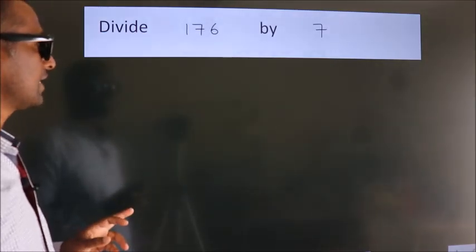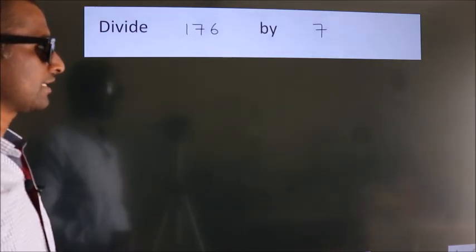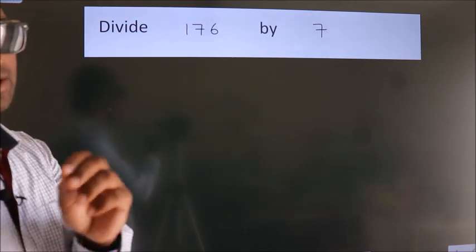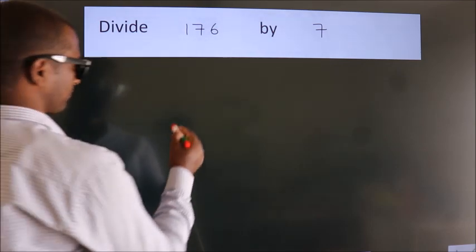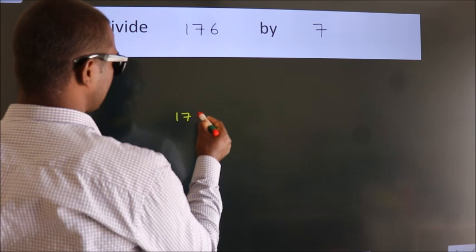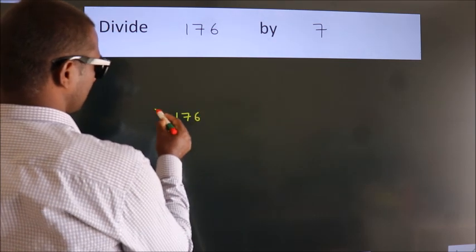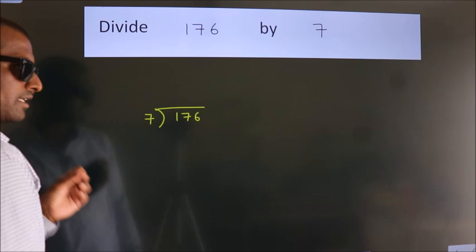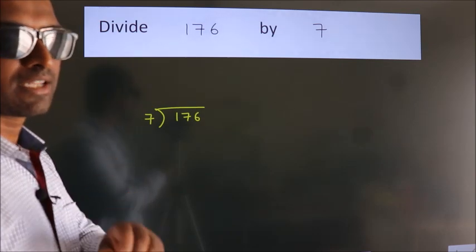Divide 176 by 7. To do this division, we should frame it in this way. 176 here, 7 here. This is your step 1. Next,